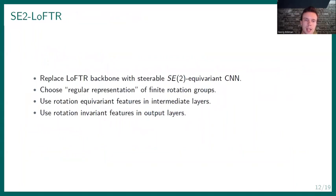So the idea with SE2-LoFTR is simply to replace the LoFTR backbone with a SE2 equivariant CNN, and to choose the regular representation of finite rotation groups in the feature maps. And I won't have time to explain that, unfortunately. And we use rotation equivariant features in the intermediate layers and rotation invariant features in the output layers. And so what's matched are actually rotation invariant features.